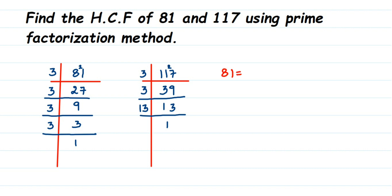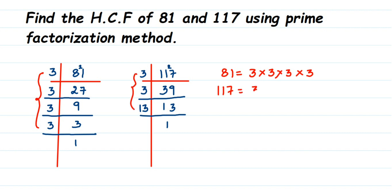Now 81 can be written using all the prime factors we got: it's 3 × 3 × 3 × 3 × 3. Similarly, 117 is equal to 3 × 3 × 13. Now once we have written these, to find out the HCF we have to search for the prime factor which is present in both.